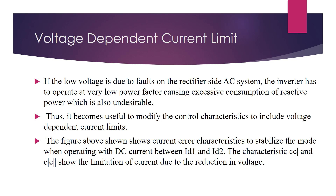The figure shows the current error characteristics that stabilize operation with DC current between ID1 and ID2. The characteristics of constant current and extension angle control show the limitation of current due to reduction in voltage. That is all about the converter control characteristics.